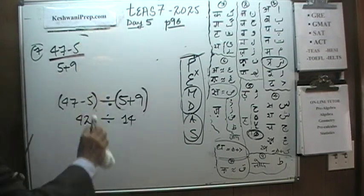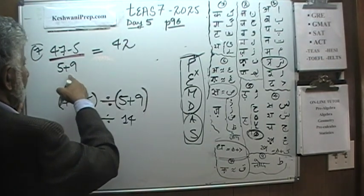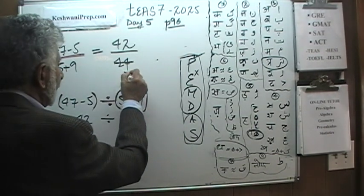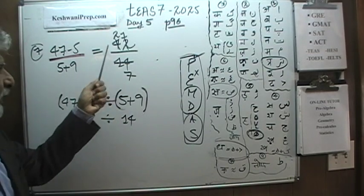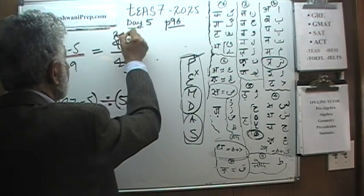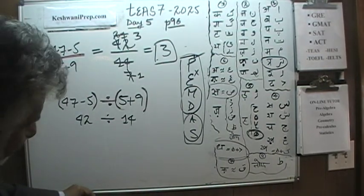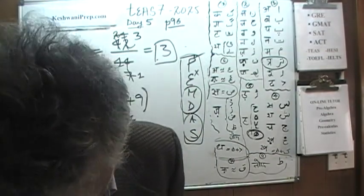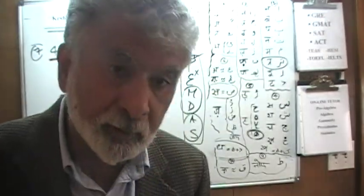Now we have 42 over 14. Both are even, so divide top and bottom by 2: that gives 21 over 7. Since 21 is a multiple of 7, divide top and bottom by 7: 21 divided by 7 is 3, and 7 divided by 7 is 1. The answer to problem number 7 is 3. We will meet again tomorrow and pick up from page number 98. Bye now.